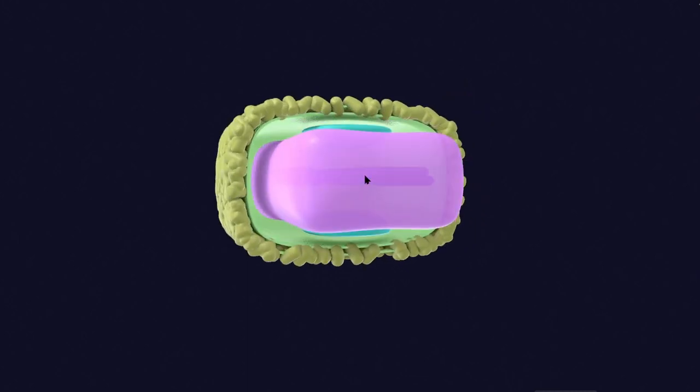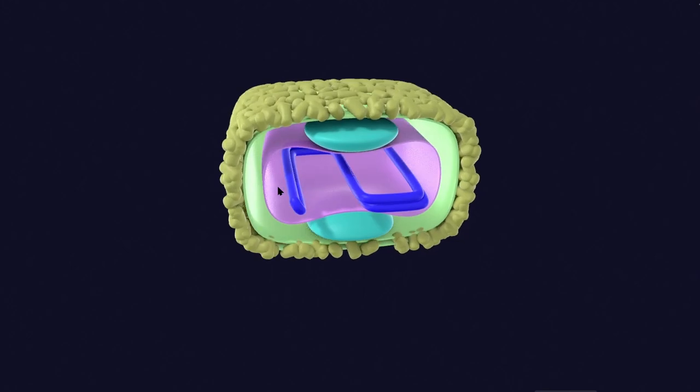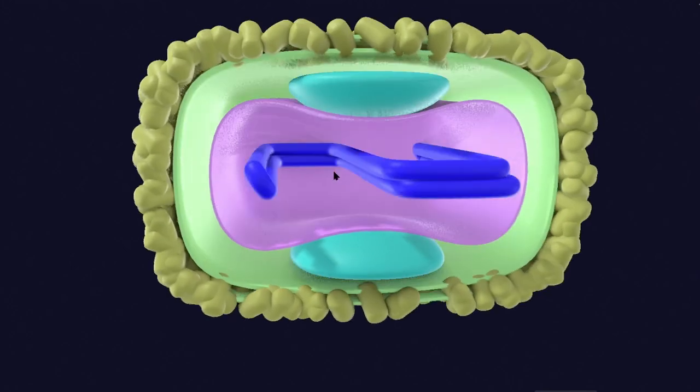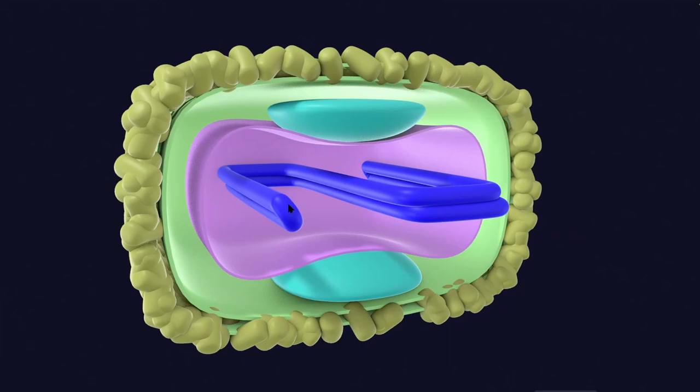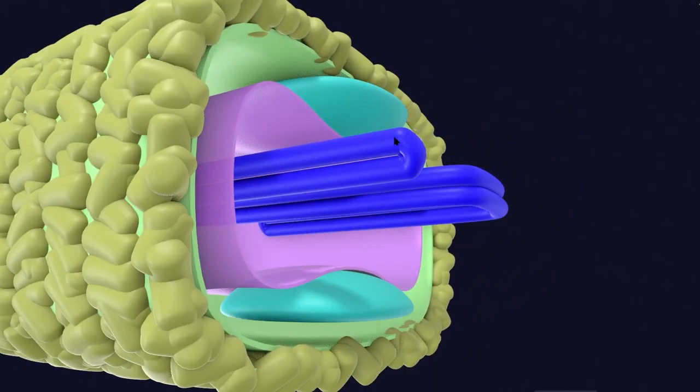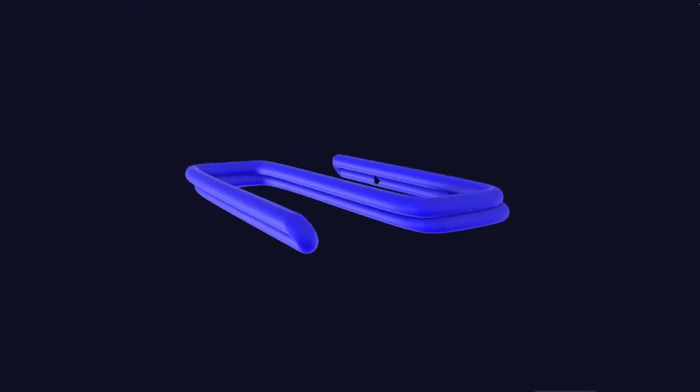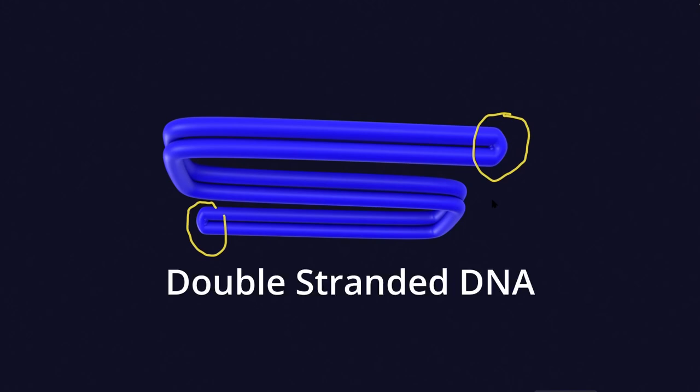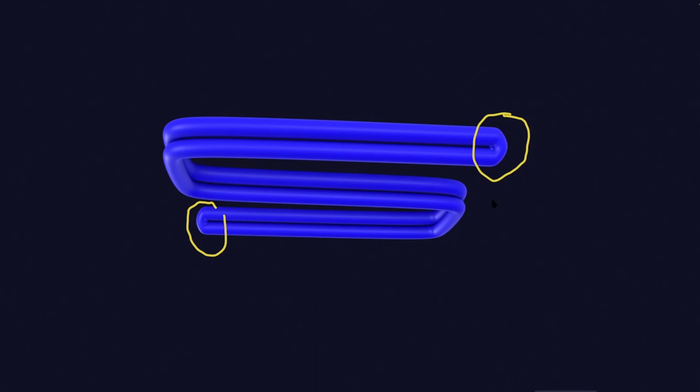If I cut a section of this capsid core, you will see the double-stranded DNA. Here is the double-stranded DNA, and at its ends, this DNA is joined. If I isolate this DNA, you can see at this point it is joined, and at this end also it is joined. It is a double-stranded DNA virus that is also enveloped. It is one of the largest groups of viruses known to humans.